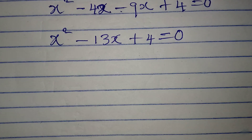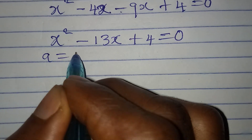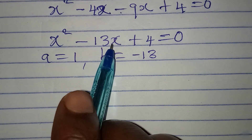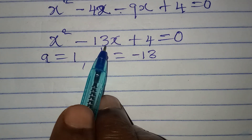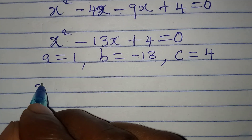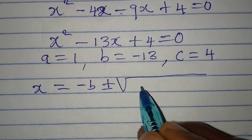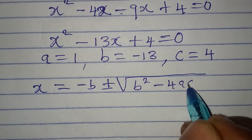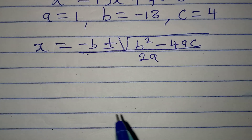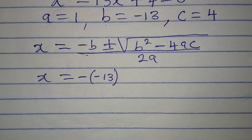We now have a quadratic equation and will apply the quadratic formula. Here a = 1 (coefficient of x²), b = -13 (coefficient of x), and c = 4 (the constant). The formula is x = (-b ± √(b² - 4ac)) / 2a.